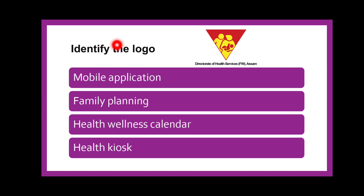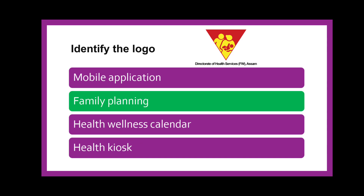Next question: Identify the logo. This inverted red triangle — as already discussed in the practical — is the logo for which amongst the given: mobile application, family planning, health wellness calendar, or health kiosks? The correct answer is family planning. This inverted red triangle is the logo for family planning.